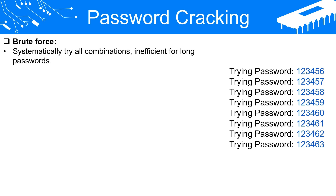Brute Force Attacks. In a brute force attack, the attacker systematically tries all possible combinations of passwords until the correct one is found. For example, for a password of length 1, they might start with A, then B, all the way up to Z, then 1, 2, up to 9, then on to special characters, and so on. This is then repeated for passwords of length 2, and so forth. This method is straightforward but highly inefficient, as the number of possible combinations increases exponentially with the length and complexity of the password. Therefore, it's only feasible for short passwords with a limited character set.